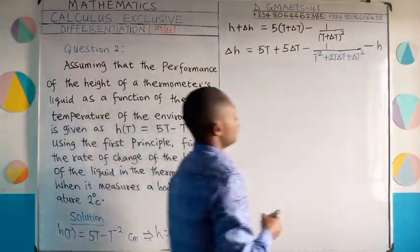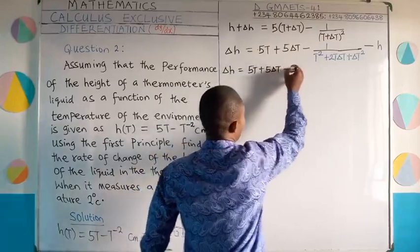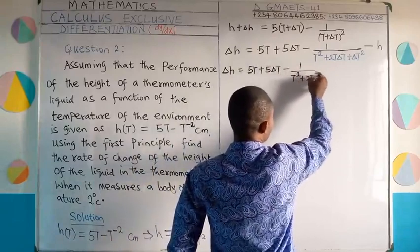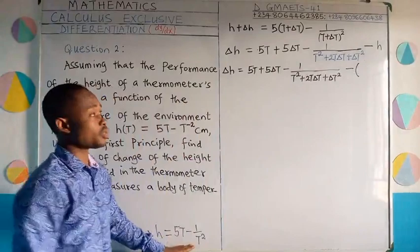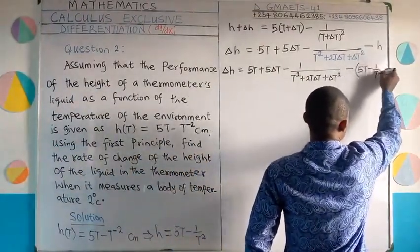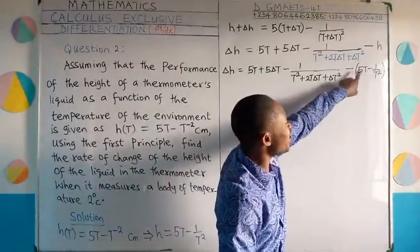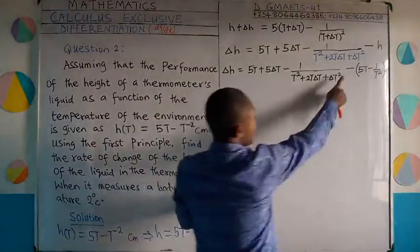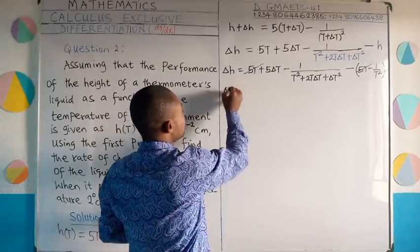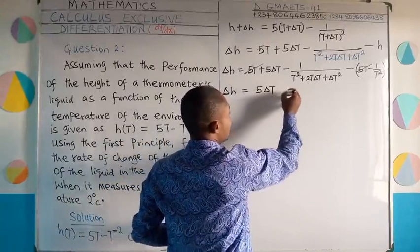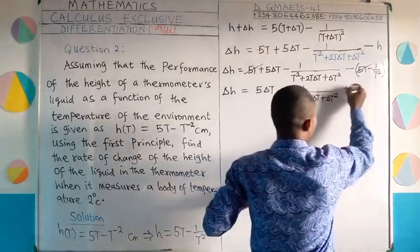Subtracting h, which equals 5t minus 1 over t squared, the 5t terms cancel. So delta h equals 5 delta t minus 1 over (t squared plus 2t delta t plus delta t squared) plus 1 over t squared. Factorizing the negative sign from the fractional terms, we work out the LCM of the denominator, which is t squared times (t squared plus 2t delta t plus delta t squared).